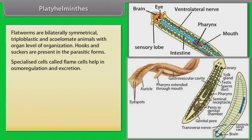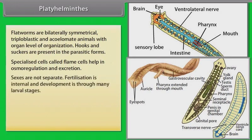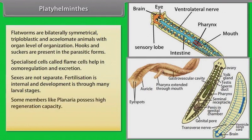Specialized cells called flame cells help in osmoregulation and excretion. Sexes are not separate. Fertilization is internal and development is through many larval stages. Some members like Planaria possess high regeneration capacity.